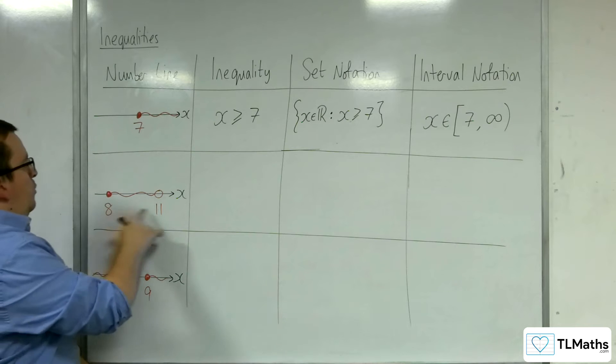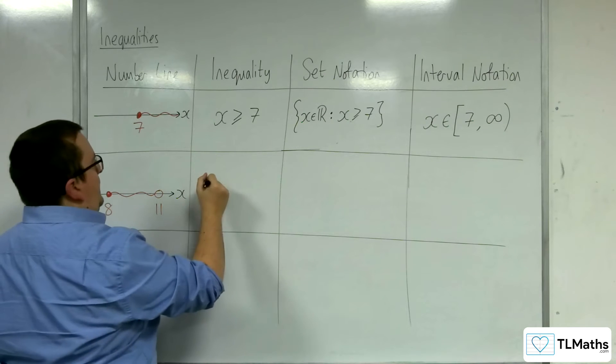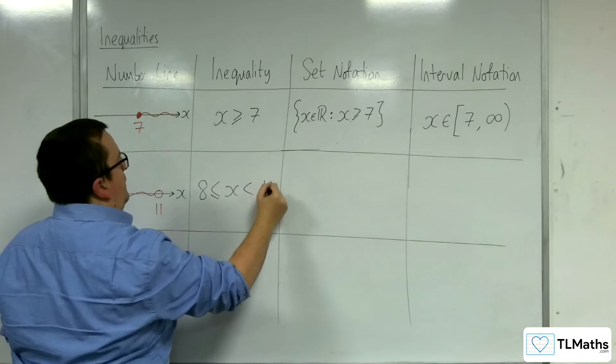Let's look at the next one. We're going between 8 and 11. 8 is included, but 11 is not.